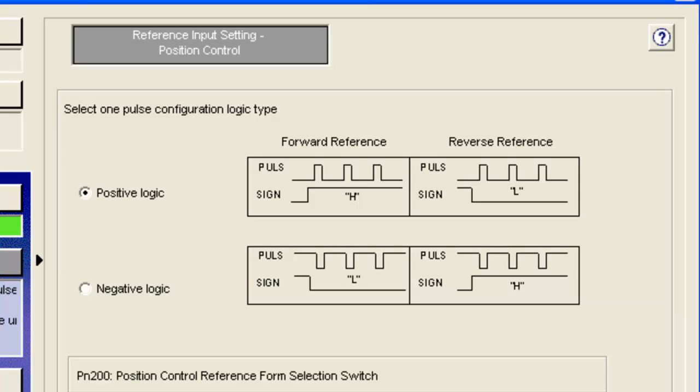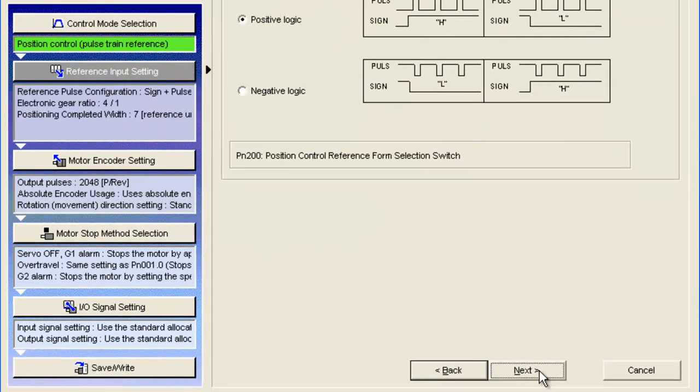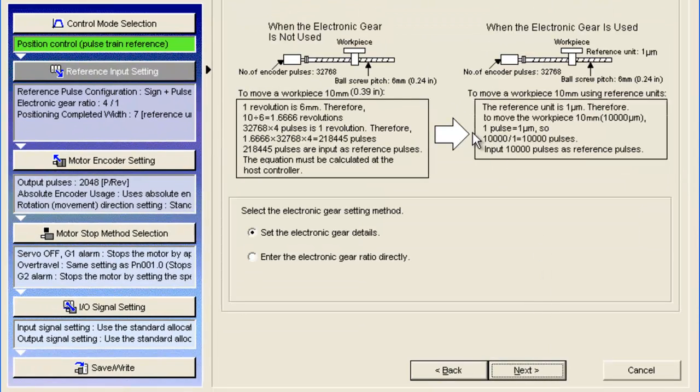There's a choice here for positive logic in the case that your pulses go from high to low. Negative logic for that case and then from low to high is positive logic. I'll just stick with positive logic. And the controller would list whether it's positive or negative or give it a drawing. I'm going to assume positive logic. Now we get to this electronic gear function. And what this means is we need to set the reference unit.